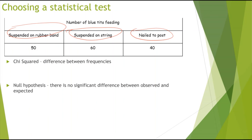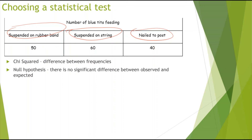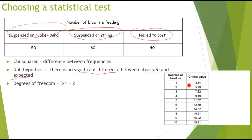In this case, the null hypothesis is that there is no significant difference between the observed and expected — remember, this is always what you put for the chi-squared test. You can then find the degrees of freedom. Because there are three sets of results, 3 minus 1 equals 2, so my degrees of freedom is 2. Looking that up on the table gives a critical value of 5.99.